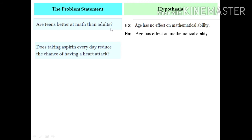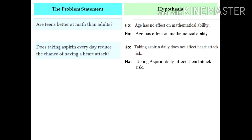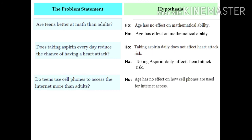Second example: does taking aspirin every day reduce the chance of having a heart attack? The null hypothesis could be stated as: taking aspirin daily does not affect heart attack risk. The alternative hypothesis: taking aspirin daily affects heart attack risk. Third: do teens use cell phones to access the internet more than adults? We are comparing the characteristics of age. The null hypothesis would be: age has no effect on how cell phones are used for internet access.